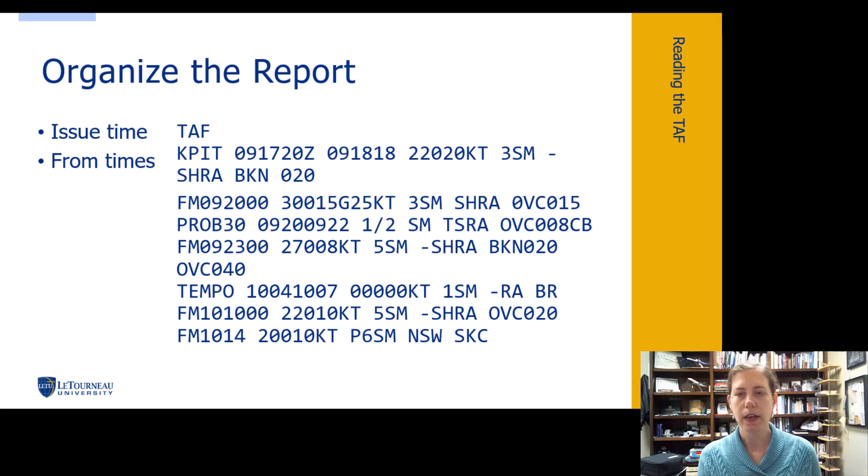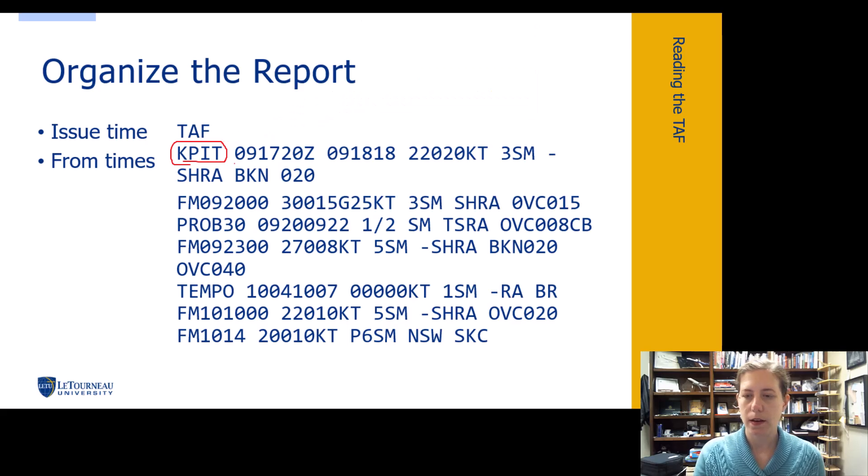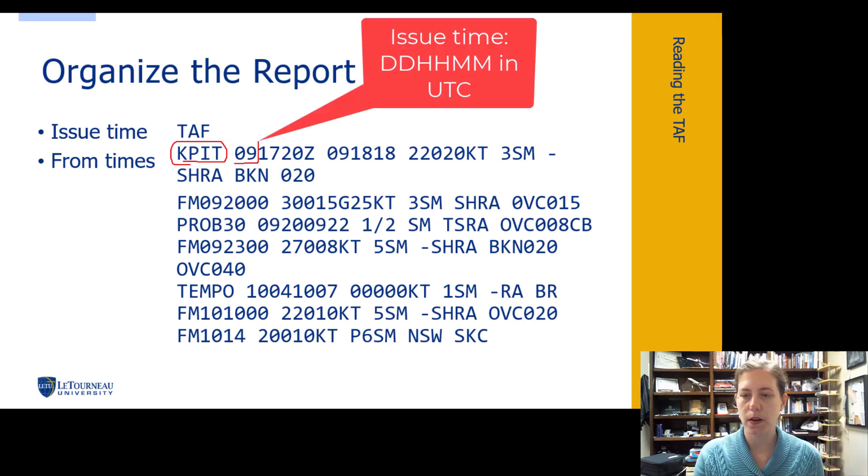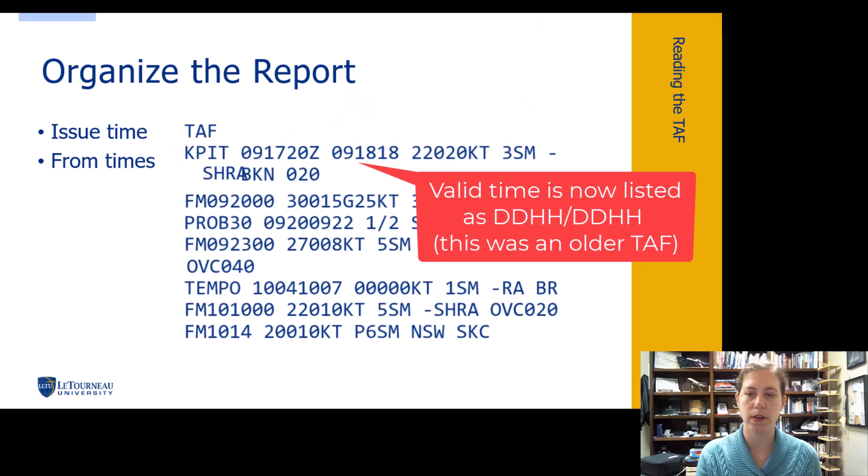The best way to start is organize the report, figure out what is going on here. So the first thing is we've got, like on a METAR, we have a station that the forecast is made for. We have an issue time, and we have that issue time here. We've got a valid time for the report. We've got a lot of information going on here.